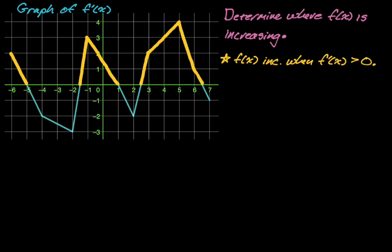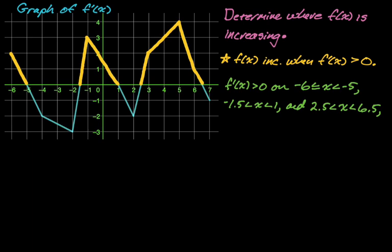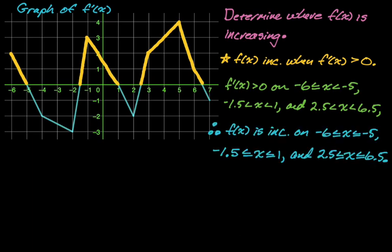f prime of x is greater than zero on negative six (inclusive) to negative five (not including negative five, since f prime is zero there), then negative 1.5 to one, and 2.5 to 6.5. Now, I'm going to include all endpoints when stating the intervals on which f is increasing. The definition of increasing from algebra two requires two points, but the calculus definition only requires one point — the value of the derivative. So f of x is increasing on [-6, -5], [-1.5, 1], and [2.5, 6.5].